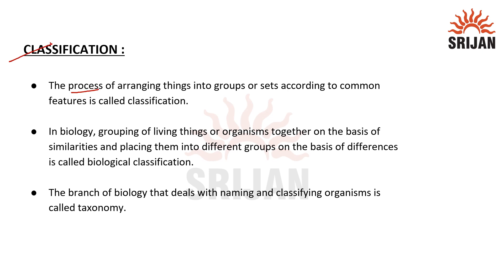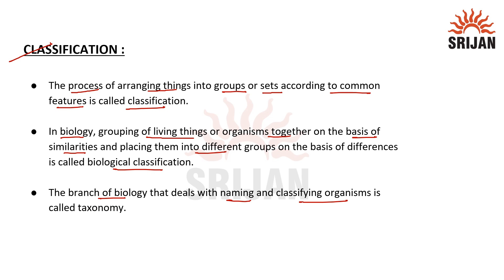Classification is the process of arranging things into groups or sets according to common features. In biology, we have many different living organisms, and all these living organisms are classified or grouped based on similarities and differences. This system is called biological classification. The branch of biology that deals with naming and classifying organisms is called taxonomy.